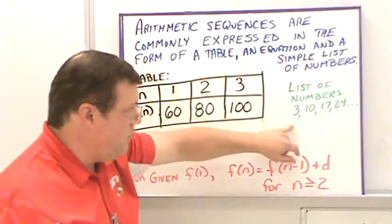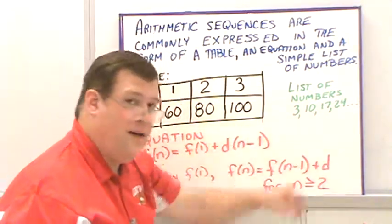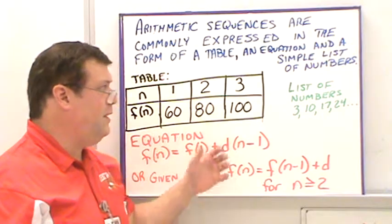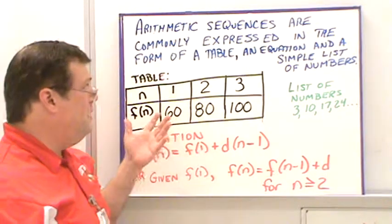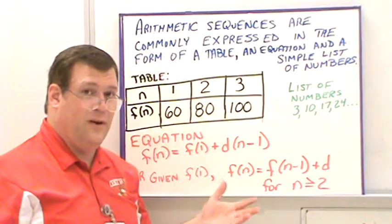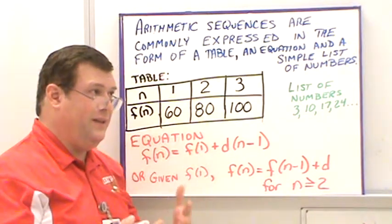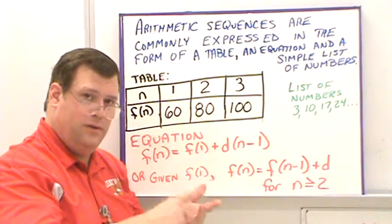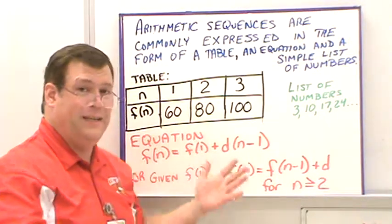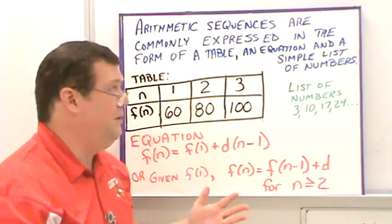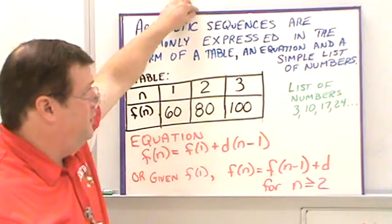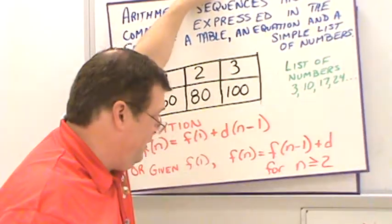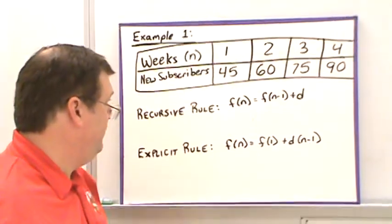The reason why the list of numbers is so simple is because sequences always assume that x values are 1, 2, 3, 4, 5 — just counting up. So it's just a straightforward counting for the terms.